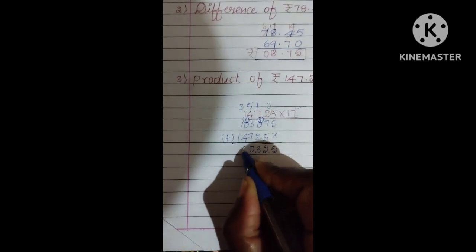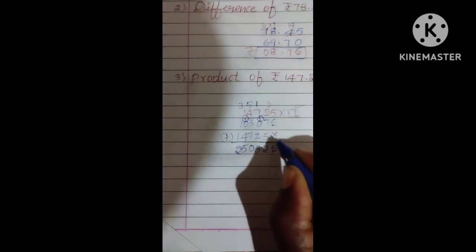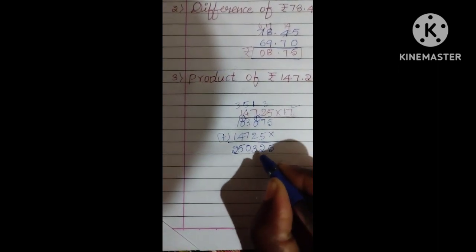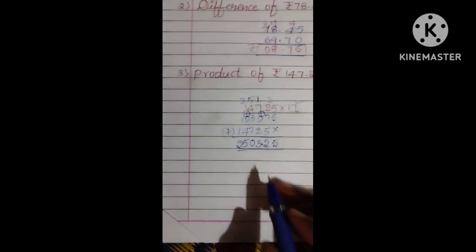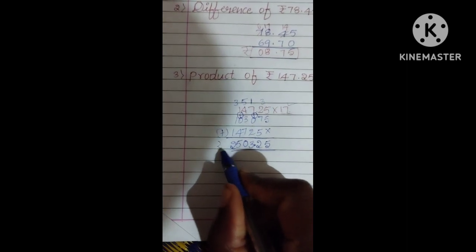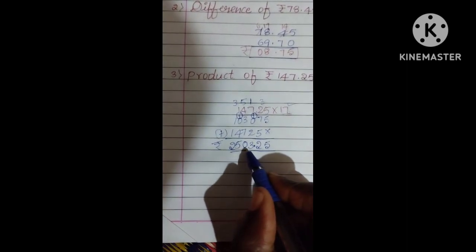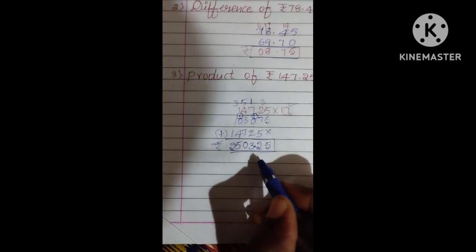1 plus 4, 5. 1 plus 1, 2. Now, we need to put the point. After 2 digits, you want to put the decimal point. So answer is now Rupees 2503 and 25 paise.